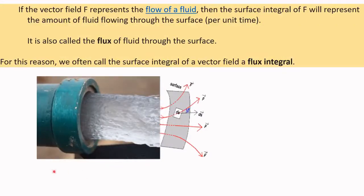Now we refer to this picture. If the vector field F bar represents flow of a fluid as shown in this diagram, you could see the flow of the water coming out of this pipe. Then the surface integral of F bar represents the amount of fluid flowing through the surface.